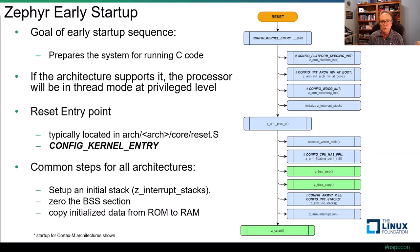The first customizable hook is a call to z_arm_platform_init. If the platform has specified the PLATFORM_SPECIFIC_INIT kconfig option, it will call this function, which provides customization needed outside of generic ARM initialization. Searching the source tree reveals examples such as the Infineon XMC4XX platform and Nordic nRF platforms, which use this hook extensively to call a Nordic HAL-provided system init function to handle a variety of items specific to their SOCs.